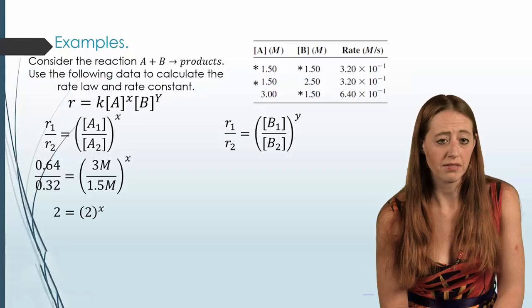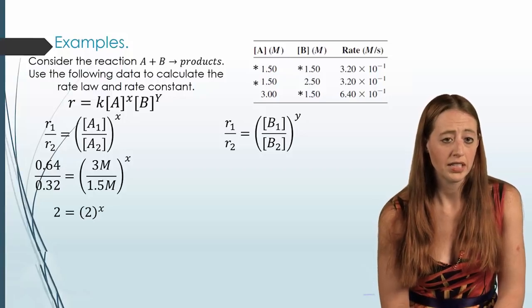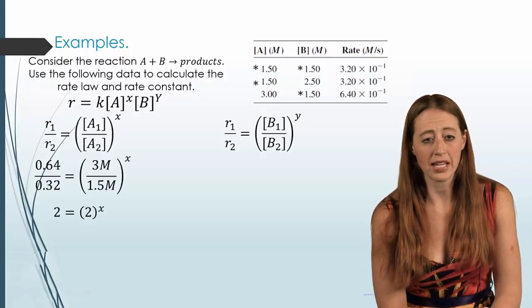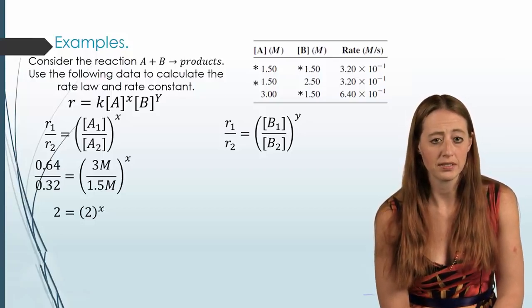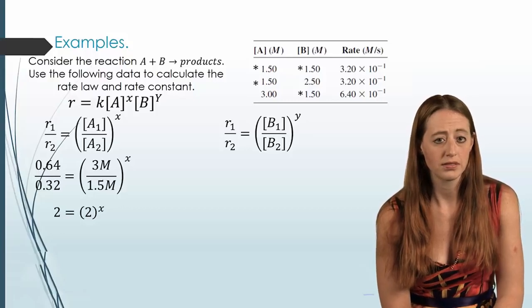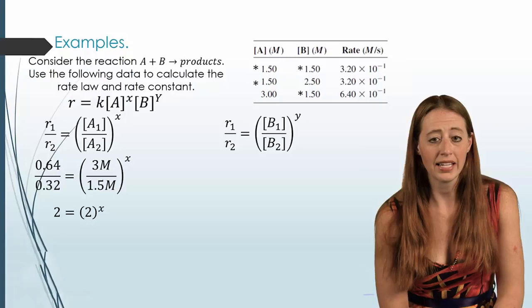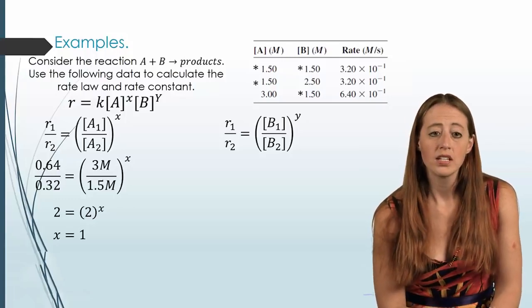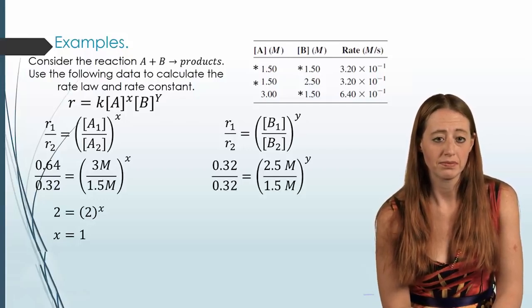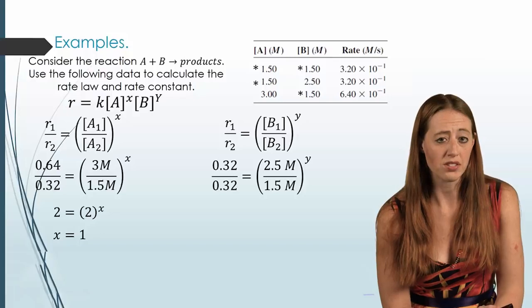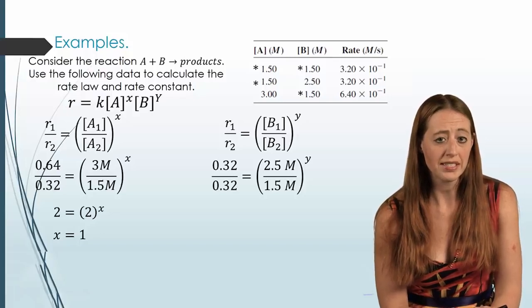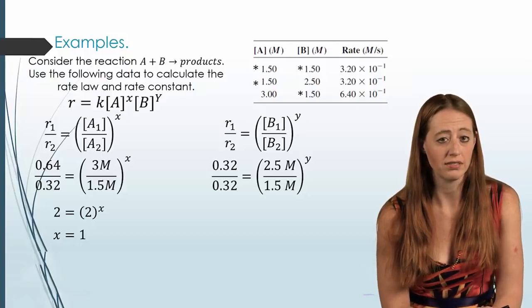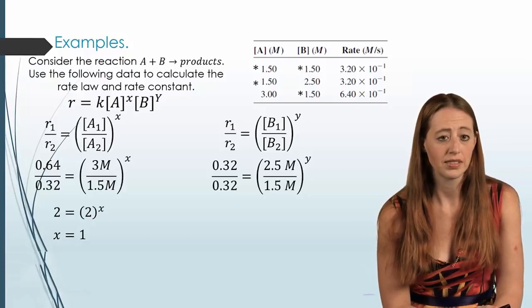So we fill our rates in to one and our concentrations into the other. From here, we can solve for our number. And you'll see we have 2 equals 2 to the x. Now, we have to think about this and decide what does that mean about x. It has to mean that x is equal to 1. So now we can do the same thing for the next one. And we can put our rates over top of each other. Now, in this case, we're comparing B. And so we need to hold A constant. And so we're using our first and second trial.